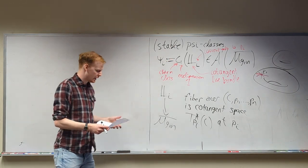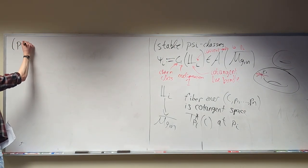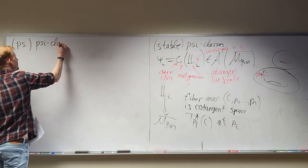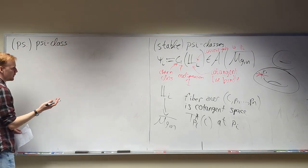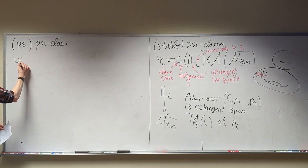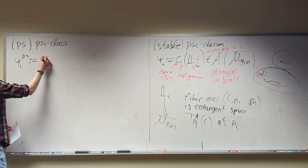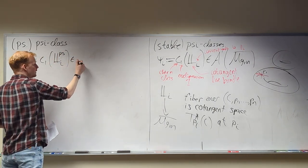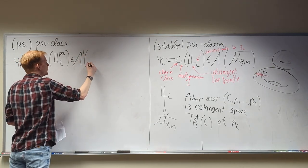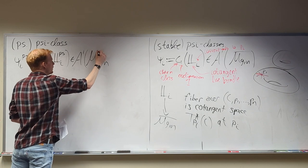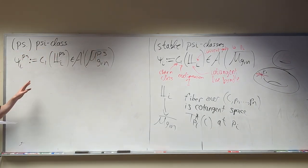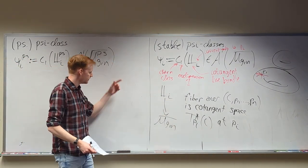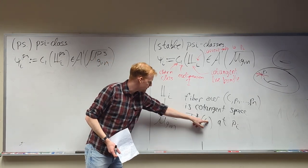This is a stable psi class. A pseudo-stable psi class is defined the same way, but we start from a pseudo-stable curve instead of a stable curve. The PS psi class is the first Chern class of the cotangent line bundle over the marked points on the pseudo-stable curve, in the codimension-one piece of the Chow ring of the moduli of pseudo-stable curves M̄^{PS}_{g,n}.